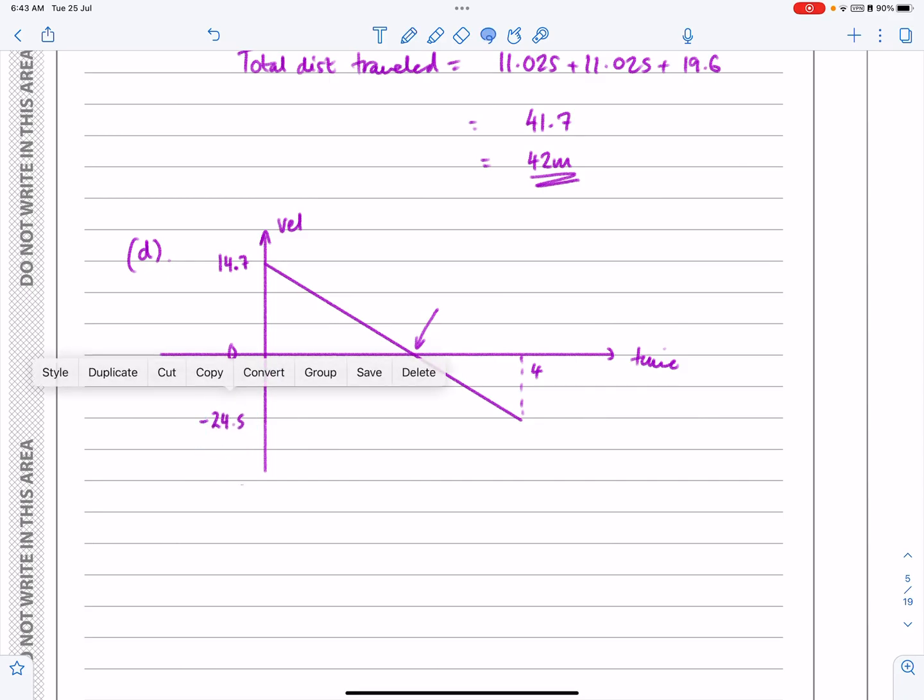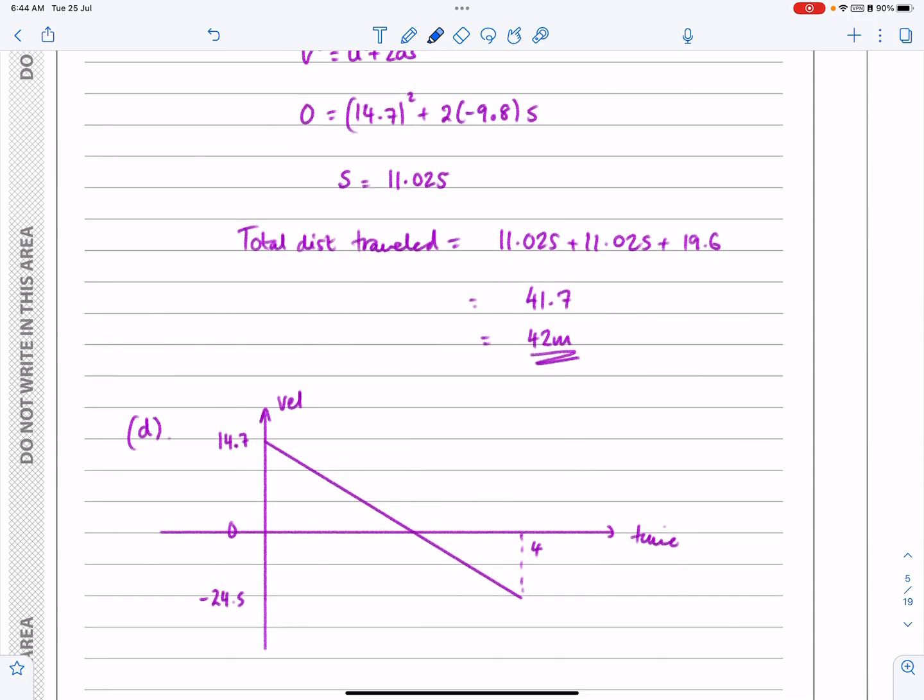So velocity time graph. Let's get rid of that bit there. That's all the information we need. Don't try and put too much information on. Don't go back now and spend any time working out what that is. They only asked me really to talk about those two points there, which I've done. So that's the velocity time graph finished. And that's the end of that question. Hopefully that all makes sense.